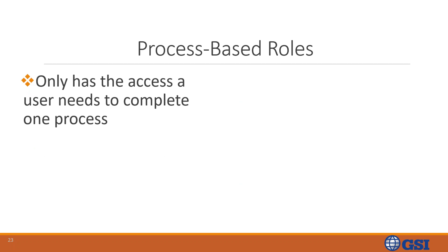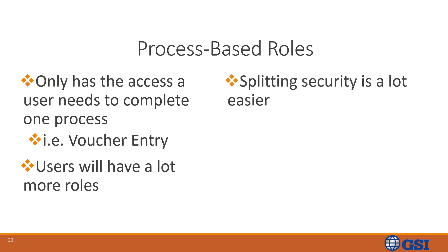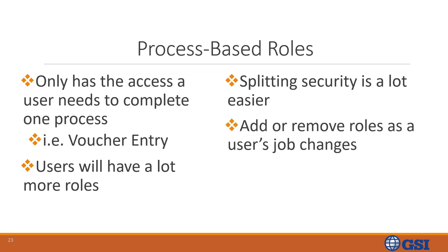Process-based roles are where the user only has access to complete one process — for instance, voucher entry. Users will have a lot more roles in this instance. Splitting security is a lot easier and cleaner here — it's a one-to-one role. If you needed to take away someone's ability to delete a voucher, you would just remove that role. Roles can be added or removed as a user's job changes — if someone gets a promotion and needs additional access, it's much easier than splitting up a job-based role.